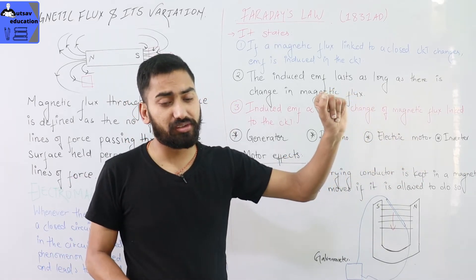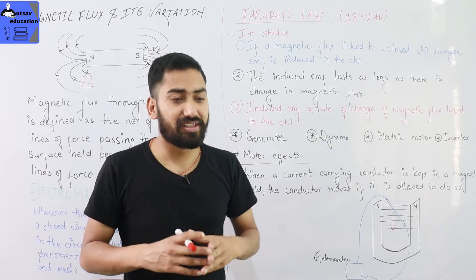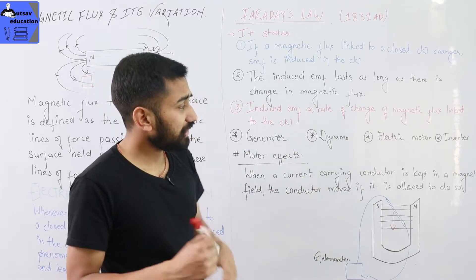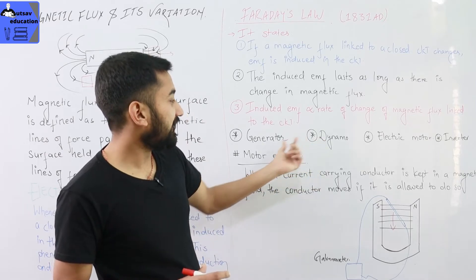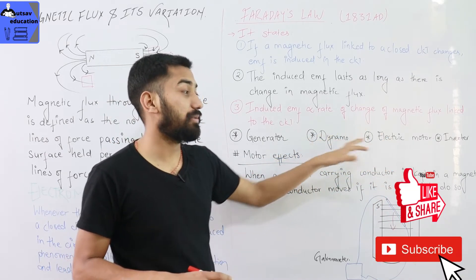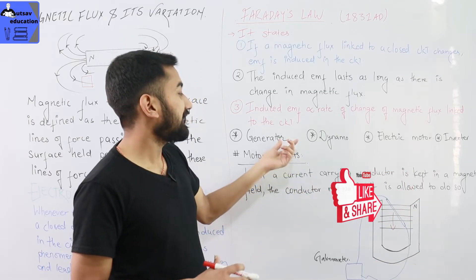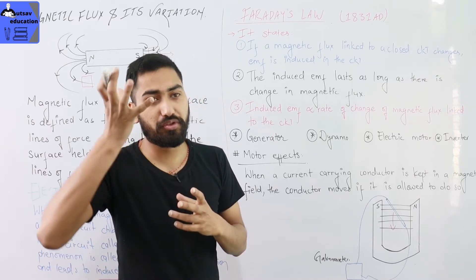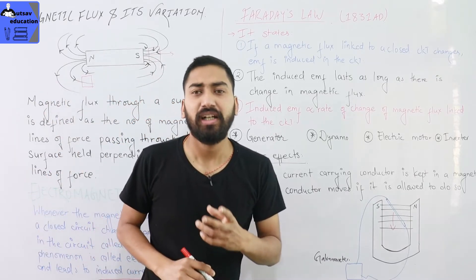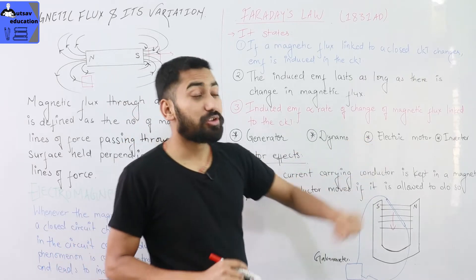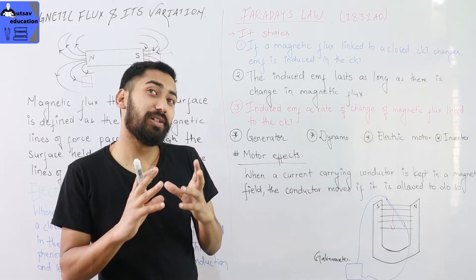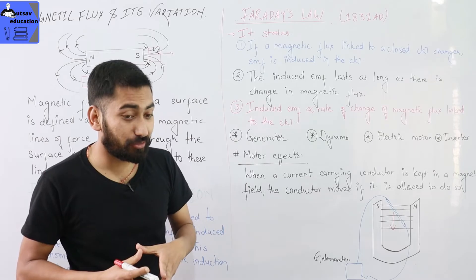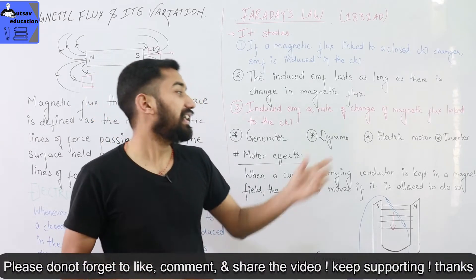The electric motor is the opposite of the generator or dynamo. In a generator, kinetic energy and a changing magnetic field produce current. In an electric motor, a fixed coil carries electric current, and that electric current in a changing magnetic field produces motion.